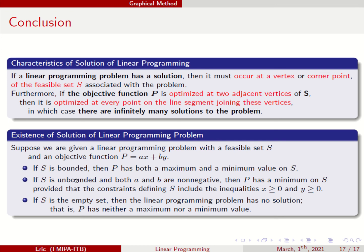In the case of an unbounded feasible set, if A and B are positive — or one of them can be 0 — then P can have a minimum if you include those non-negativity inequalities. In physical problems, x and y usually represent the number of units, so they should be non-negative. This is all for the linear programming graphical method chapter. In the next chapter, we are going to discuss linear programming with an algebraic approach.